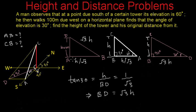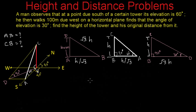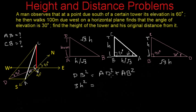Looking at triangle ABD, we have found AB equals H over root 3 and DB equals root 3 times H, and the value of AD is 100 meters. Using the Pythagorean theorem, DB squared equals AD squared plus AB squared. So root 3 times H whole squared, that is 3H squared, equals 100 squared plus H squared over 3.